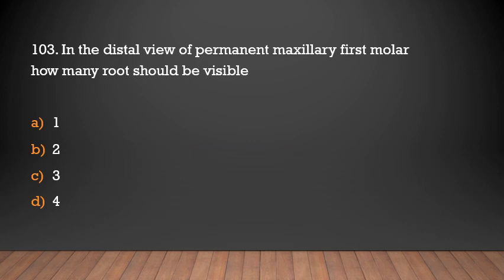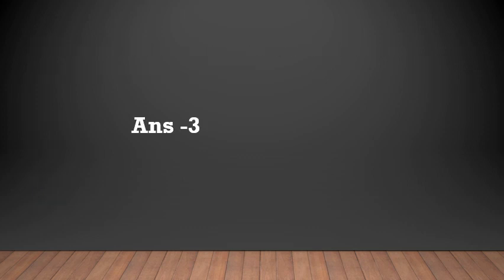In the distal view of the permanent maxillary first molar, how many roots should be visible? Options: 1, 2, 3, 4. Answer: Three roots.